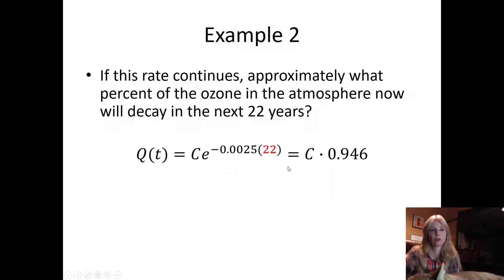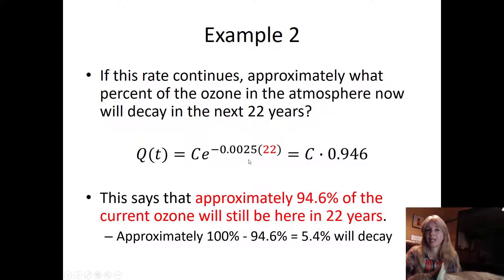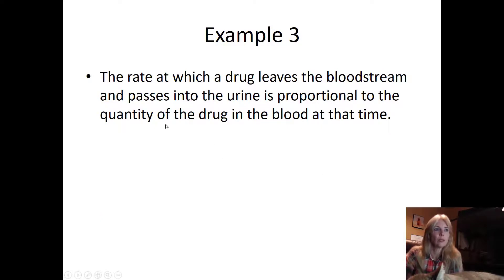If this rate continues, approximately what percent of the ozone in the atmosphere now will decay in the next 22 years? We just simply plug in 22. Notice we have this constant, but in this case, approximately 94.6 percent. If I make this a percentage of the current ozone, it will still be here in 22 years. The question was how much will decay, so 100% minus that value. This constant of proportionality, if you remember looking back at the graph, is just changing the shape of how quickly it's actually decaying.